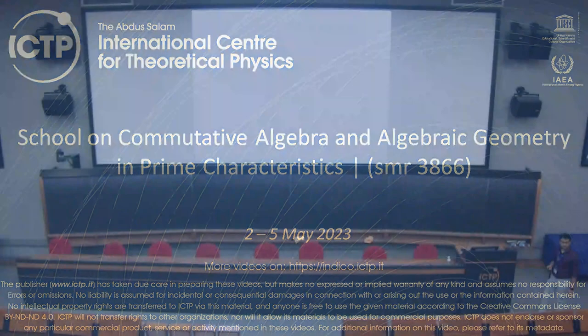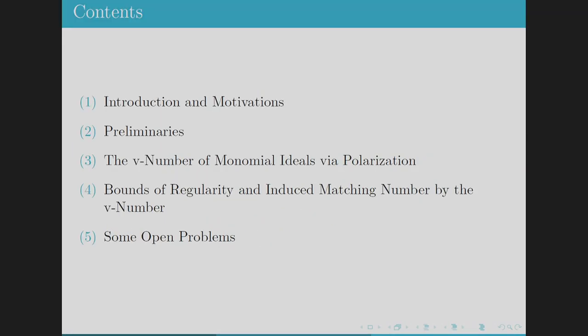This is the V number of monomial ideal. This is a very recent topic. The contents are: I will give some introduction and motivations, then some preliminaries, then I will talk about the V number of monomial ideals via its polarization, then bounds of regularity and induced matching number by the V number, and then some open problems.